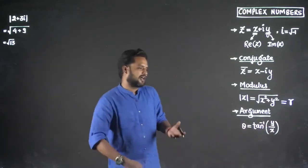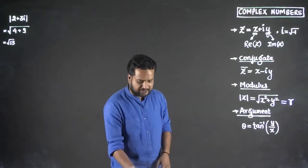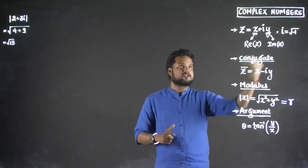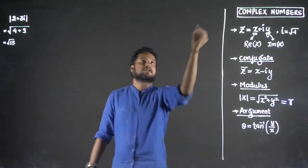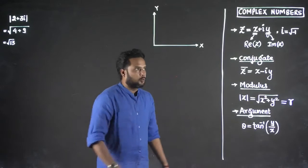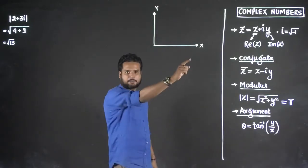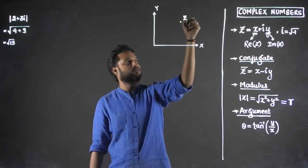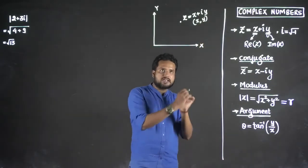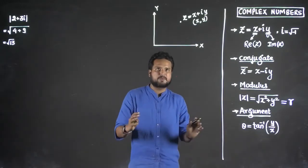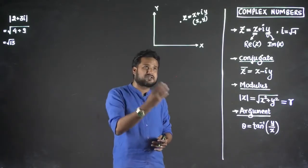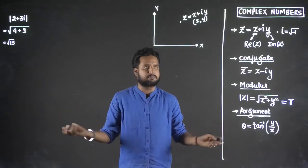Now you must be wondering — what is argument, what is modulus? We know how to find them, but what are they actually? In reality, what do we mean by modulus and argument? Let me answer that. Consider x-axis and y-axis. When you write a complex number x plus iy, that complex number z which is x plus iy is basically a coordinate (x, y). If I plot that coordinate on x and y axes, this is called an Argand diagram — a simple x-axis, y-axis structure where we represent a complex number.